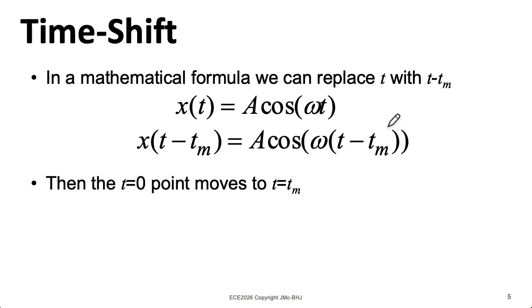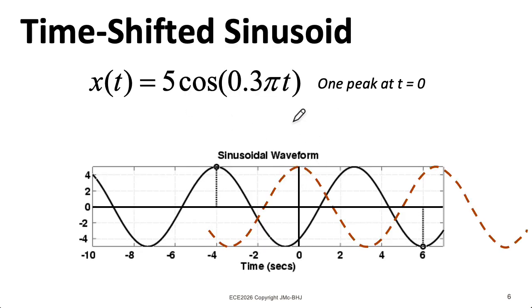Now, the peak of the original cosine was at 0, so that peak has now moved to tm. The red line here is plotting this function, this 5 cosine 0.3π t, and it has a peak at 0.